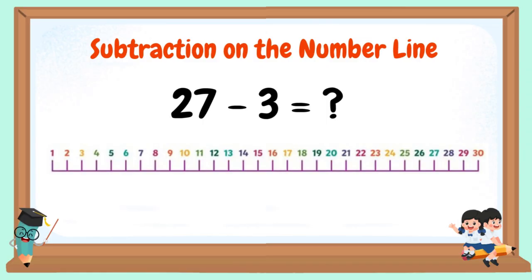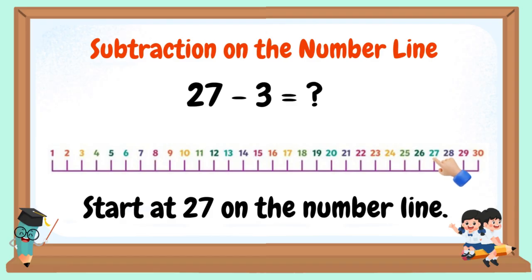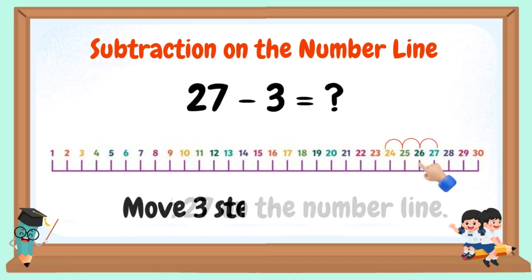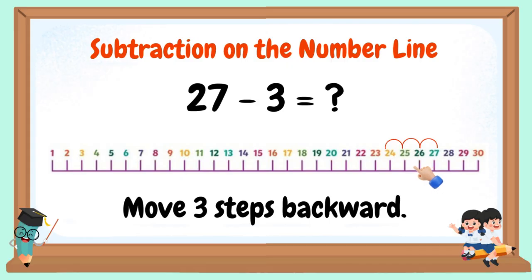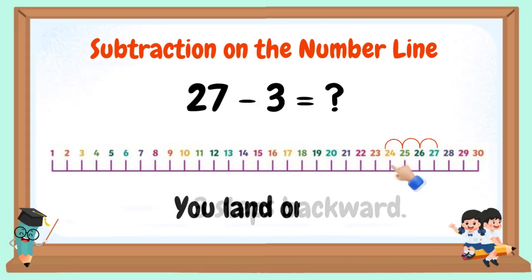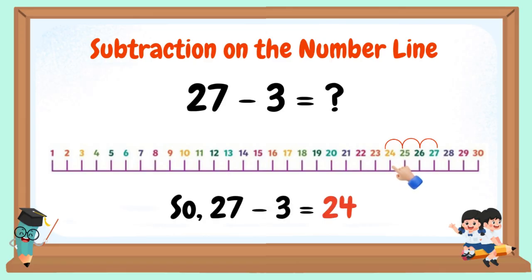27 minus 3 equals — start at 27 on the number line, move 3 steps backward. You land on 24. So 27 minus 3 equals 24.